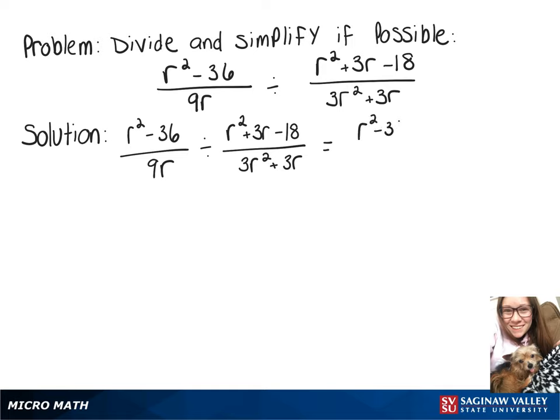So we're going to have r squared minus 36 over 9r times 3r squared plus 3r over r squared plus 3r minus 18.